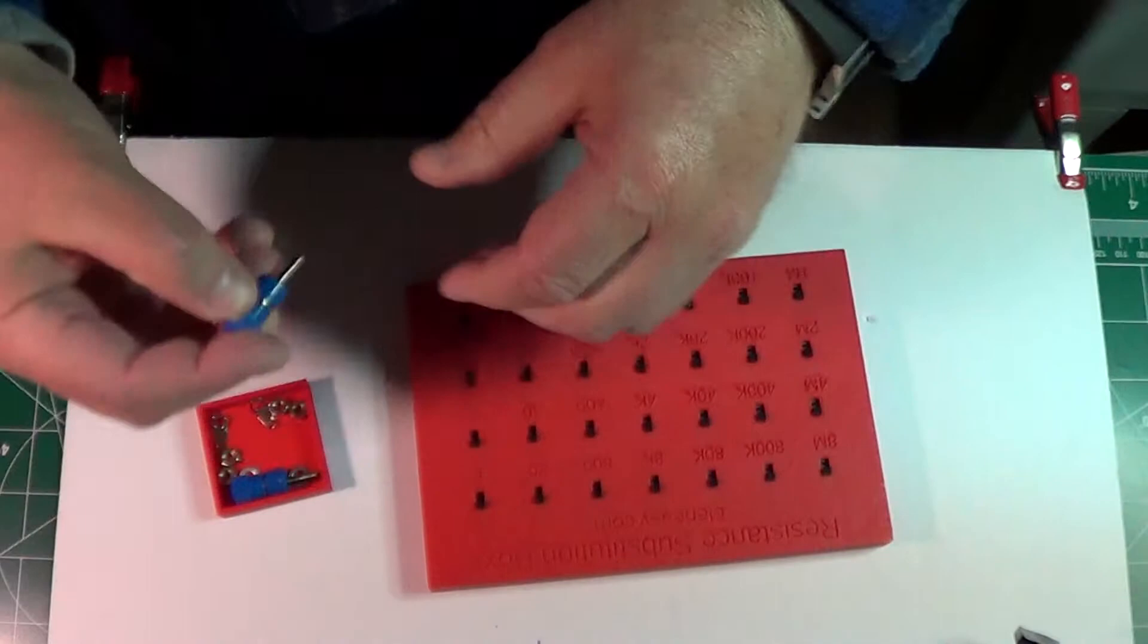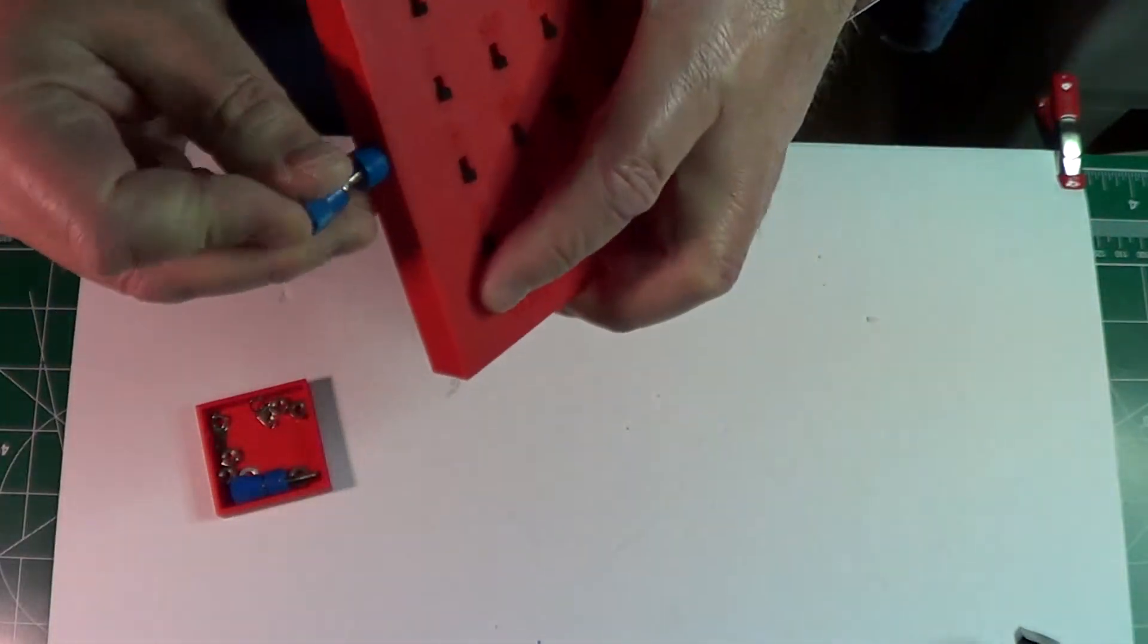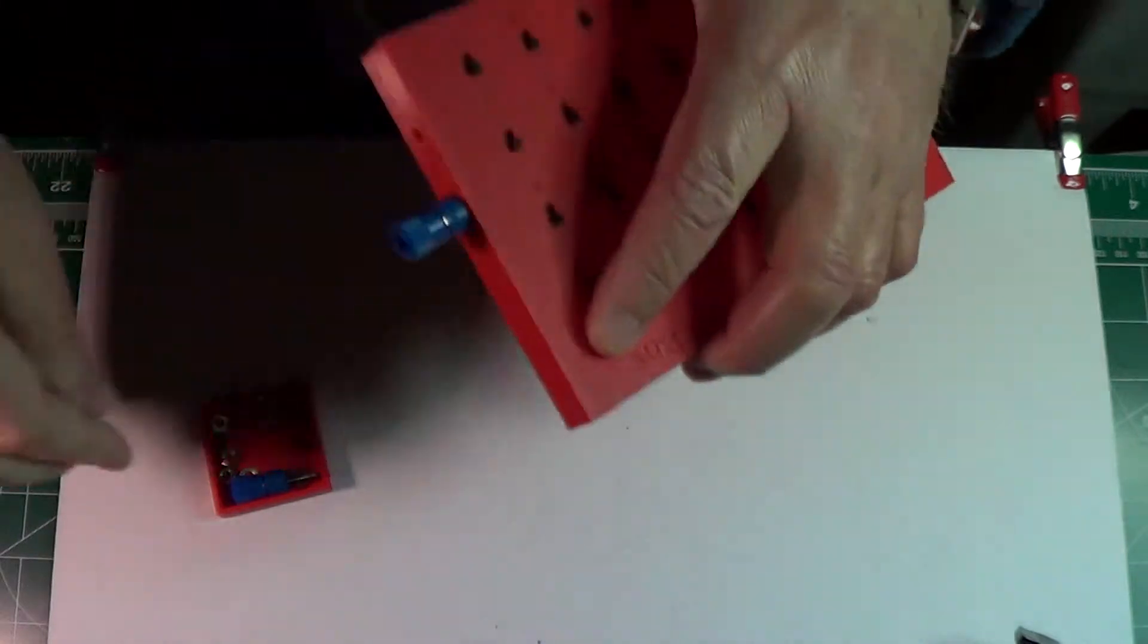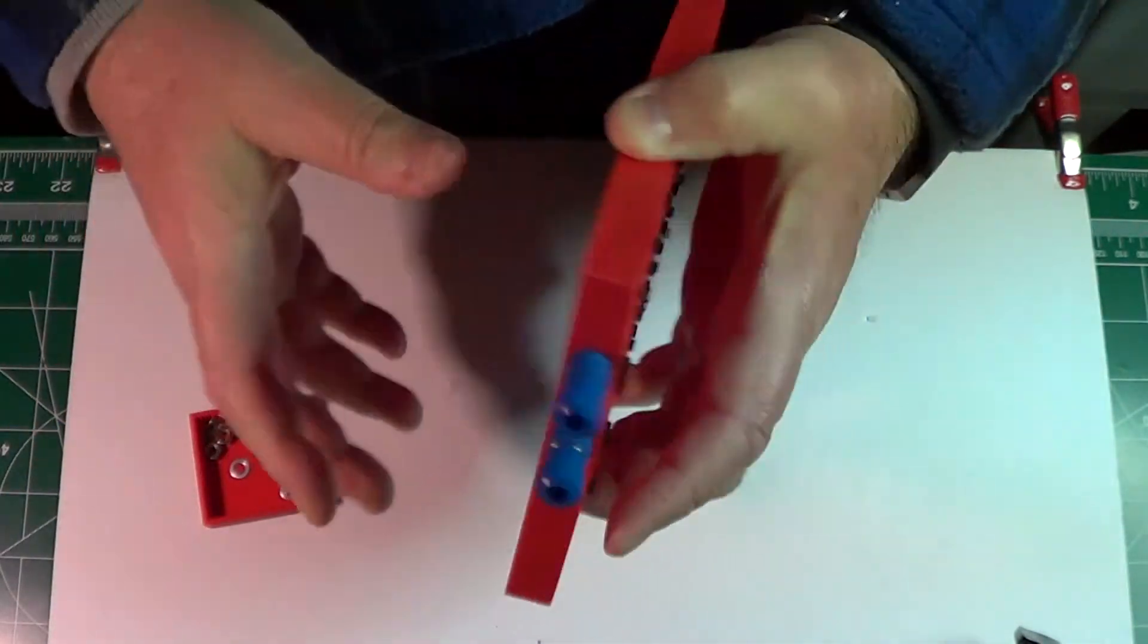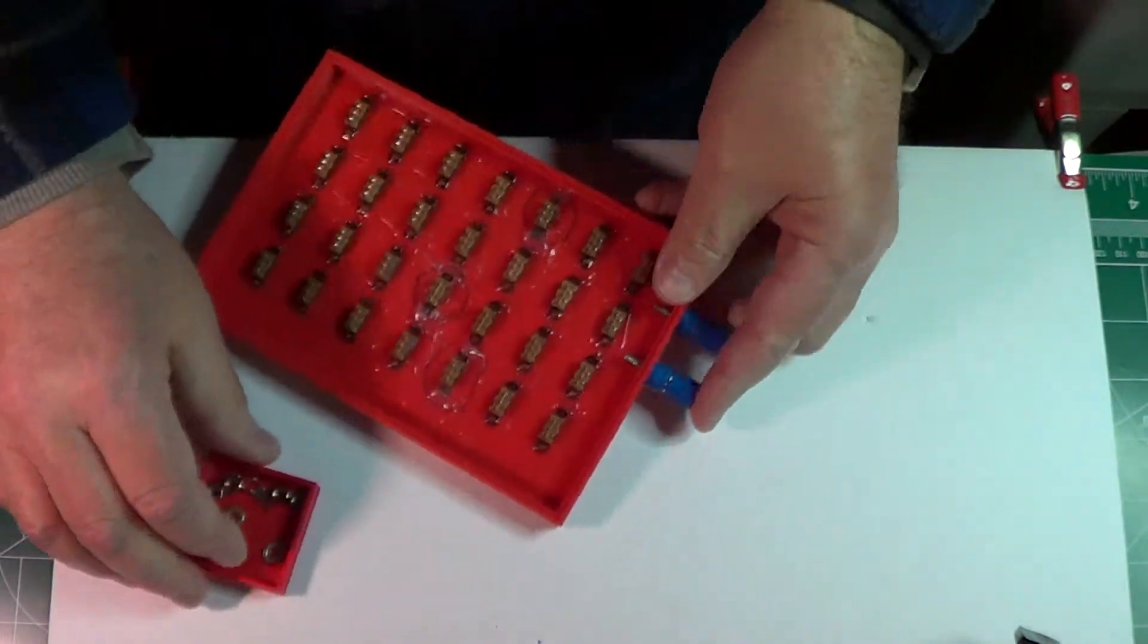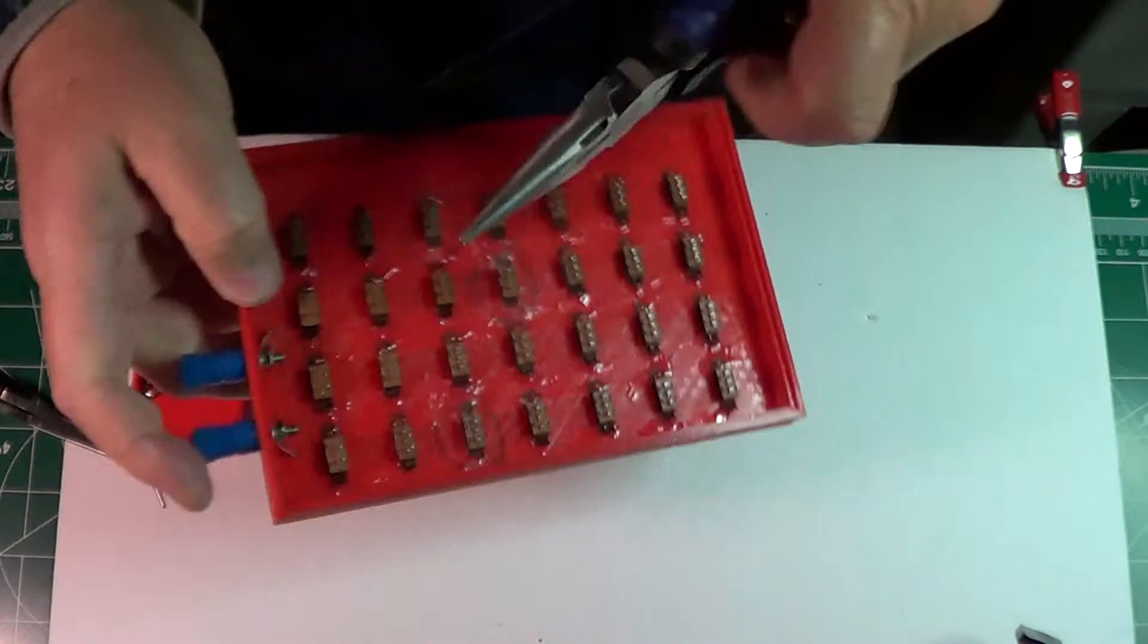After the glue cured, I installed on the side of the box the two binding posts that allow the device to be connected to a circuit under development. Since these are resistors and they do not have a polarity, I chose binding posts of the same color, in this case blue, to signify the absence of polarity.